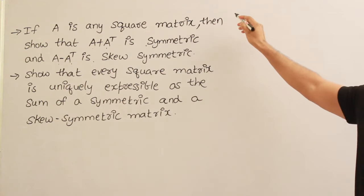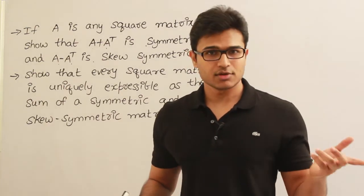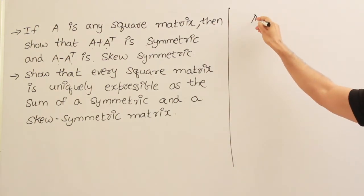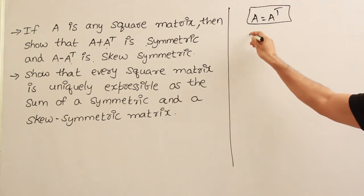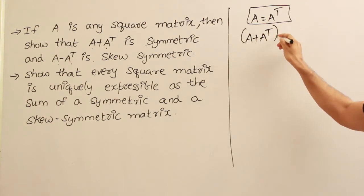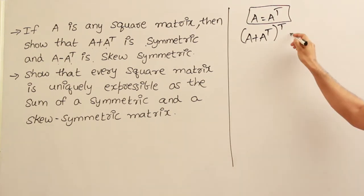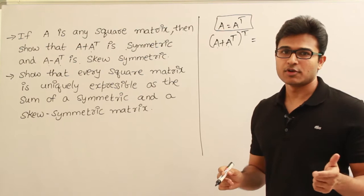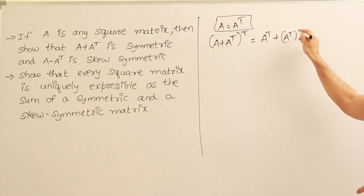Whenever we want to show that some matrix is symmetric, we take that matrix, find the transpose of it, and prove that the result equals the original matrix. So, we need to prove that A plus A transpose is symmetric. To prove it, find the transpose of A plus A transpose. It is similar to A plus B whole transpose, and by the properties of transpose, A plus B transpose equals A transpose plus B transpose. So we get A transpose plus A transpose whole transpose.